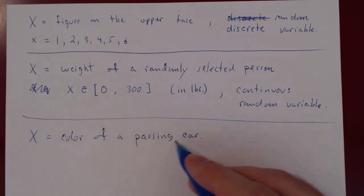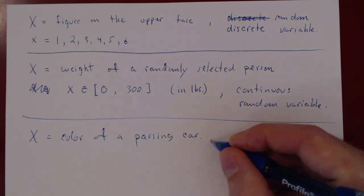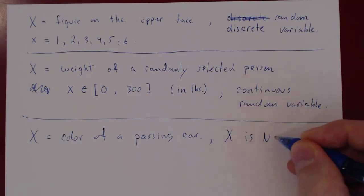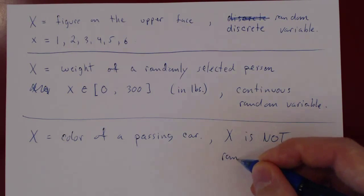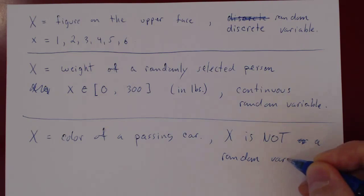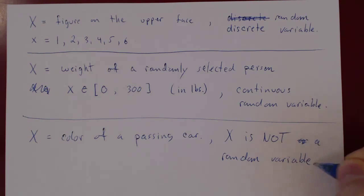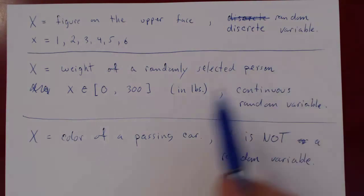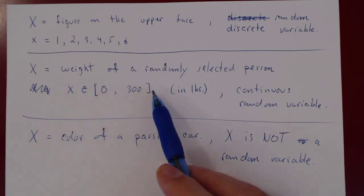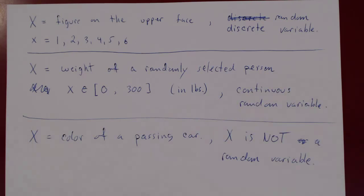Because X does not take on numbers but actually colors, X is not a random variable. X must take on random values, and those values must be numerical. If you can count them, X is a discrete random variable; if the values are ranging over an interval of real values, we have a continuous random variable.